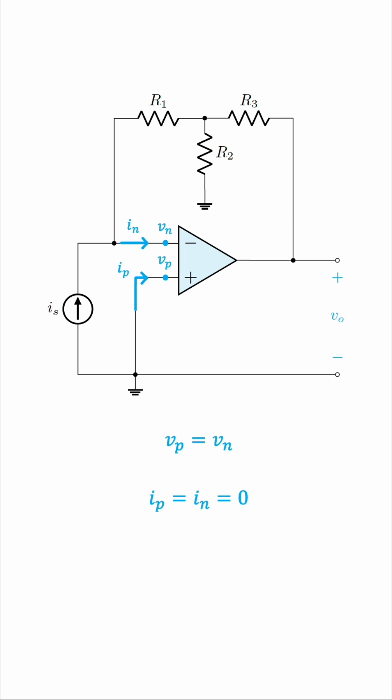Notice that the positive input is connected directly to ground. This means that Vp is zero, meaning that Vn must also be zero by the first governing equation. Good. Let's label these on the circuit.